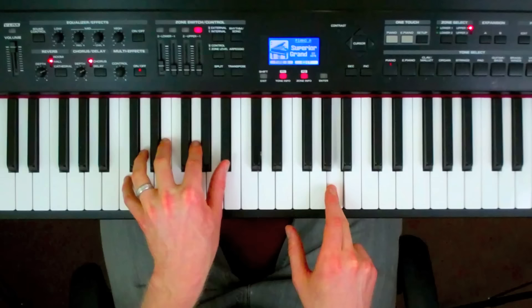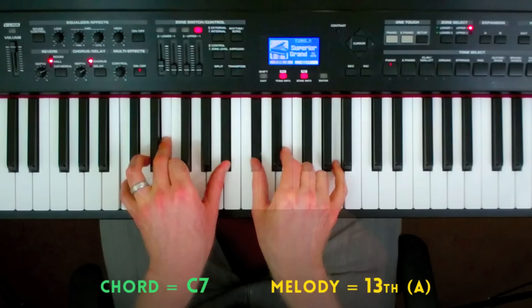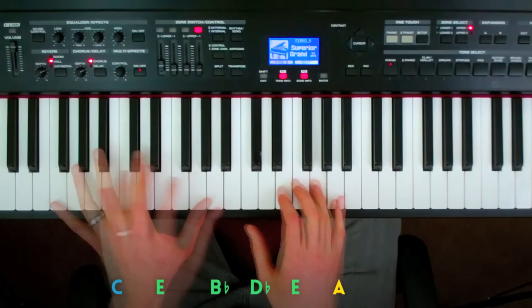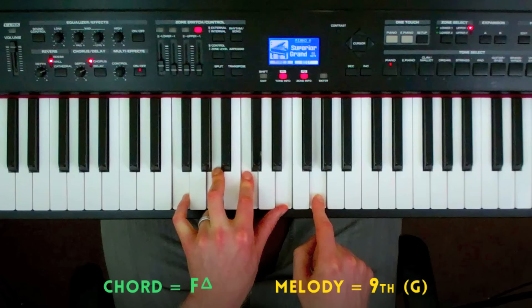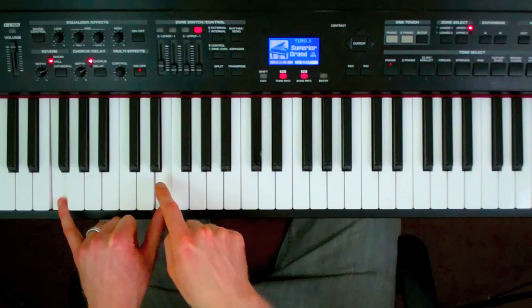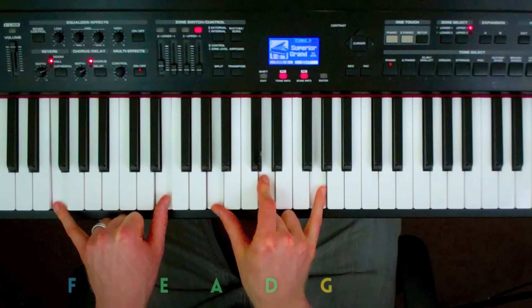The next chord we have a C dominant 7, the melody note is A, the 6th or the 13th, I'll probably play this. The next chord we have is an F major 7, the melody note is a G. I'll probably go with this, a stack of 4ths up from the major 7th of F.